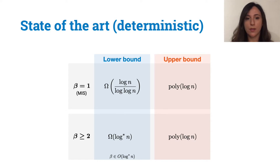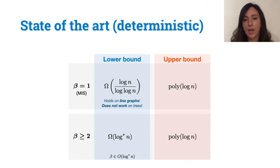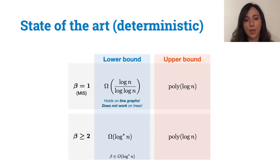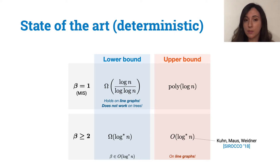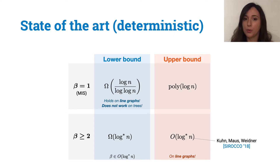Let me make some considerations about this progress. All these super log star n lower bounds for MIS are actually directly implied by lower bounds for the maximal matching problem, as we can solve maximal matching on graph G by running an algorithm for MIS on the line graph of G. Hence, all these super log star n lower bounds for MIS only apply to line graphs and do not apply to simpler graph structures such as trees. Also, there is no hope to use these lower bounds for 2-beta ruling sets when beta is at least 2, because 2-beta ruling sets are easy on line graphs when beta is at least 2. This means that if we want to improve the current log star n lower bound for ruling sets, we cannot prove lower bounds on the line graph.